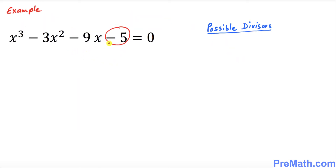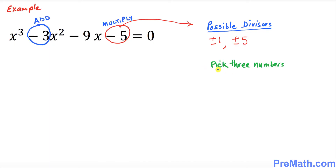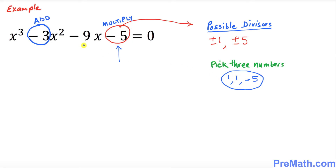In the next example, look at this cubic equation. The last number is negative 5. The possible divisors are positive 1, negative 1, positive 5, and negative 5. We are going to pick any three numbers among these so that when we add them they add up to negative 3, and when we multiply them they multiply to negative 5. The numbers I'm going to pick are 1, 1, and negative 5. If you multiply them you get negative 5, and if you add them you get negative 3.